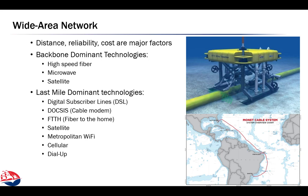This picture shows an undersea fiber optic cable bundle. The Monet cable system discussed in the next video is a modern fiber trunk that can handle 64 terabits per second aggregate bandwidth across a 10,000 kilometer link — certainly shared by a number of different providers.